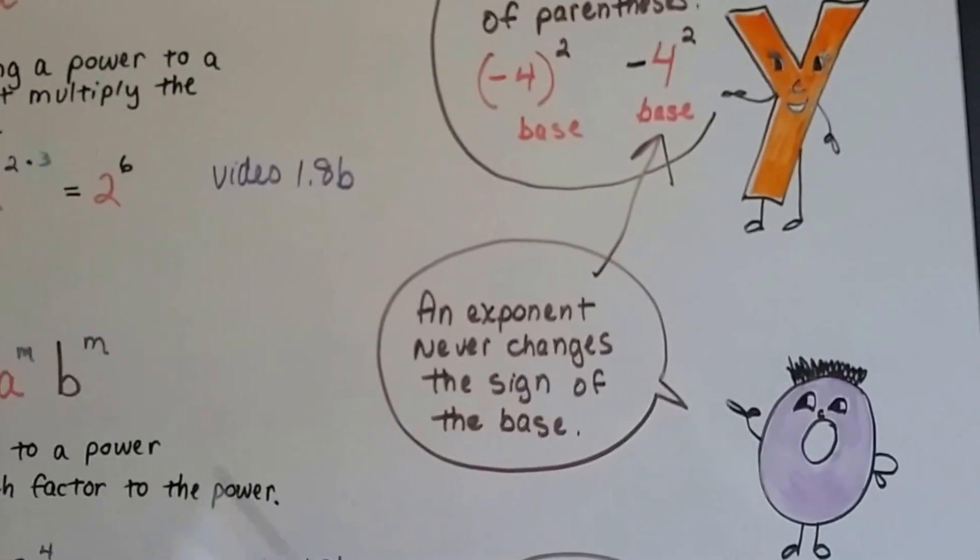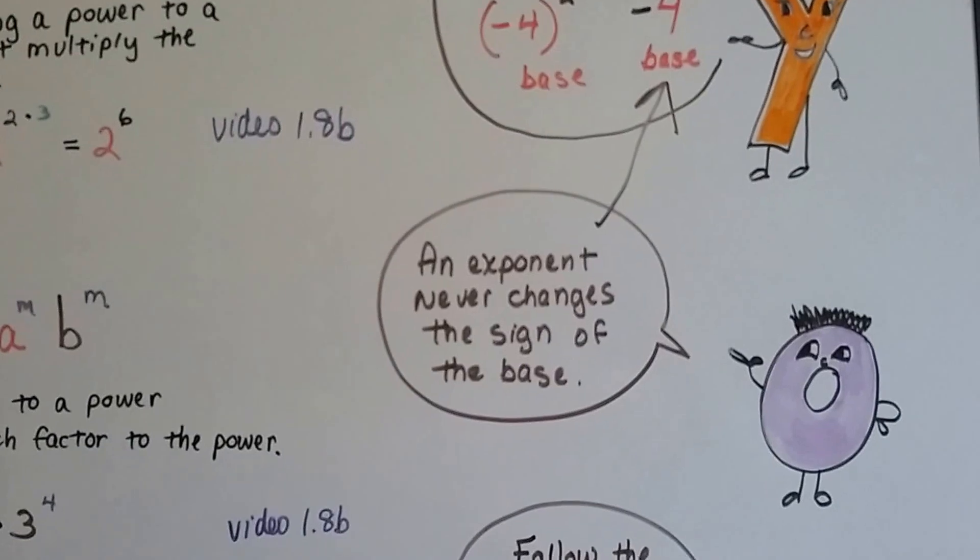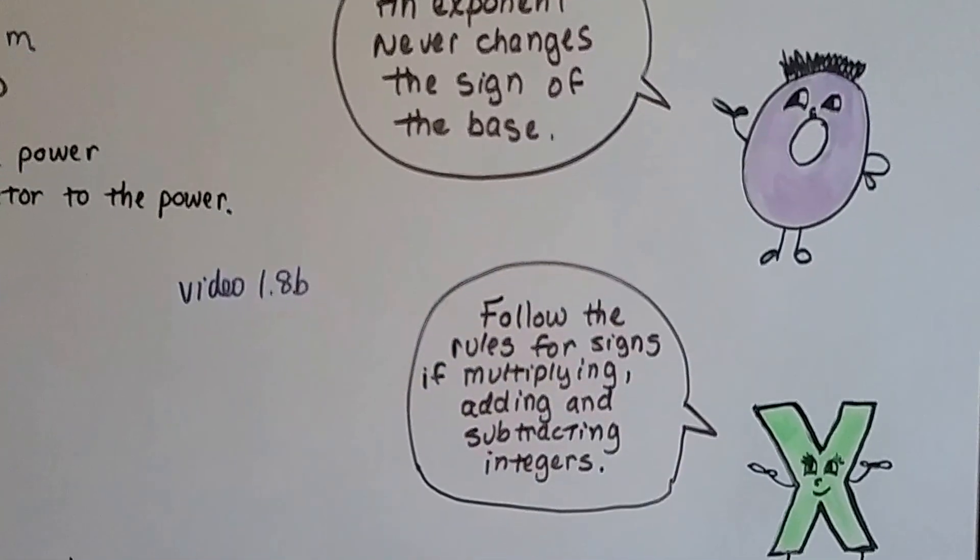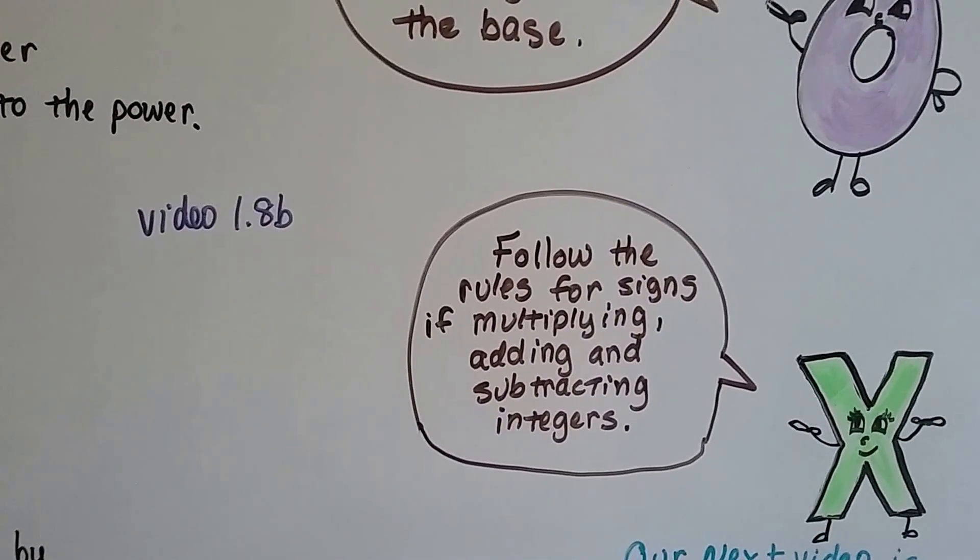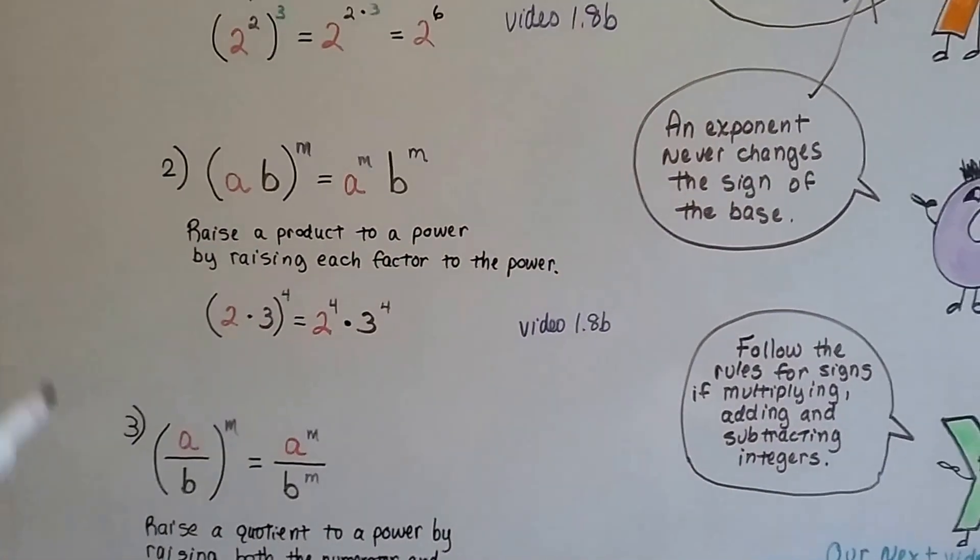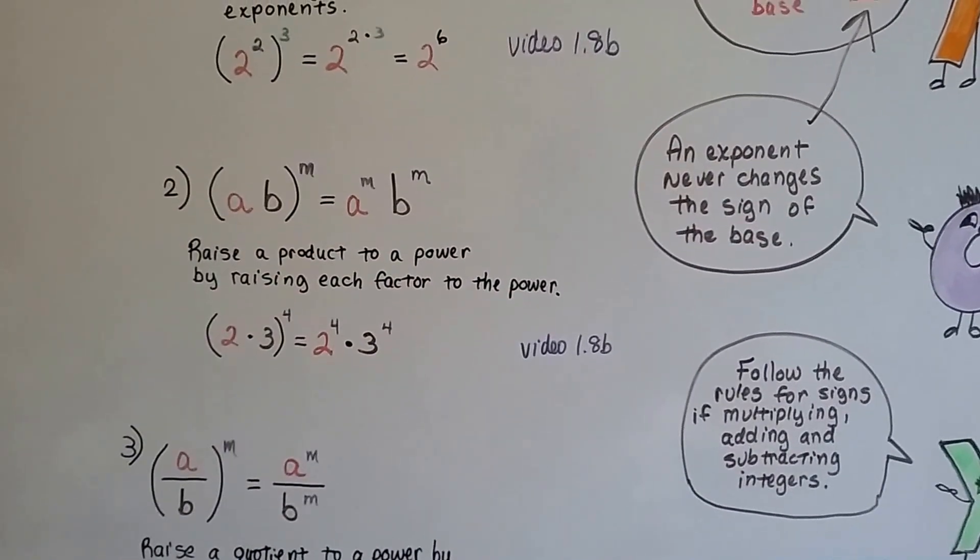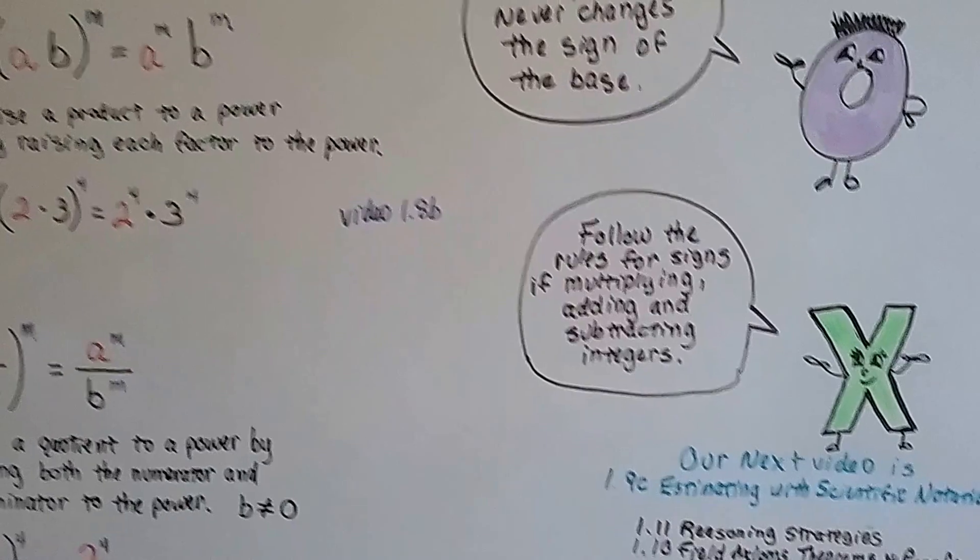And you can watch the videos in 1.8 and 1.7 to learn about this if you want to go into more detail. Just follow the rules for signs if you're multiplying, adding, or subtracting integers. So if you're multiplying a negative and a positive, they're unlike, so you know it's going to be a negative exponent. Just make sure you follow those rules for the integers.